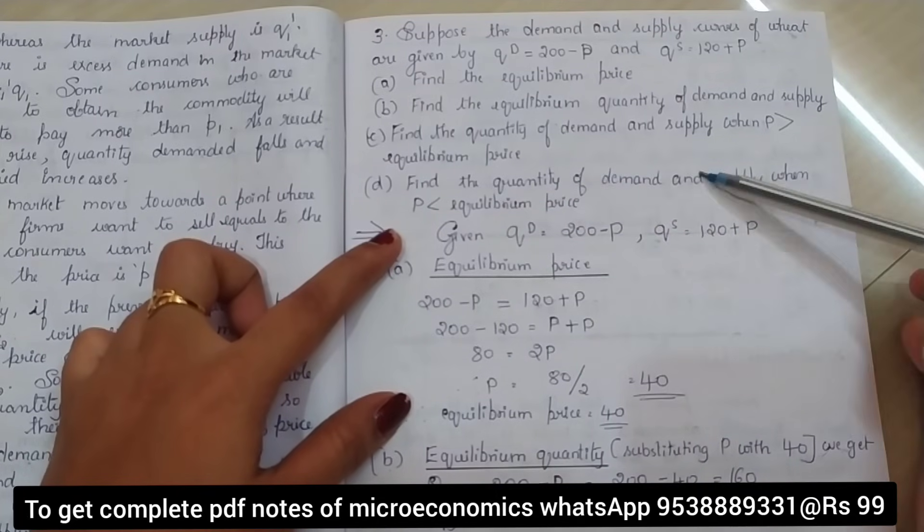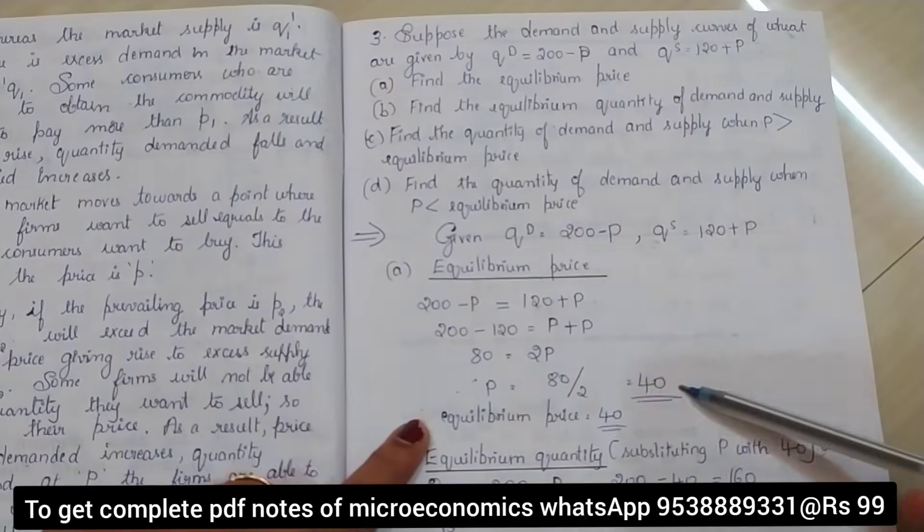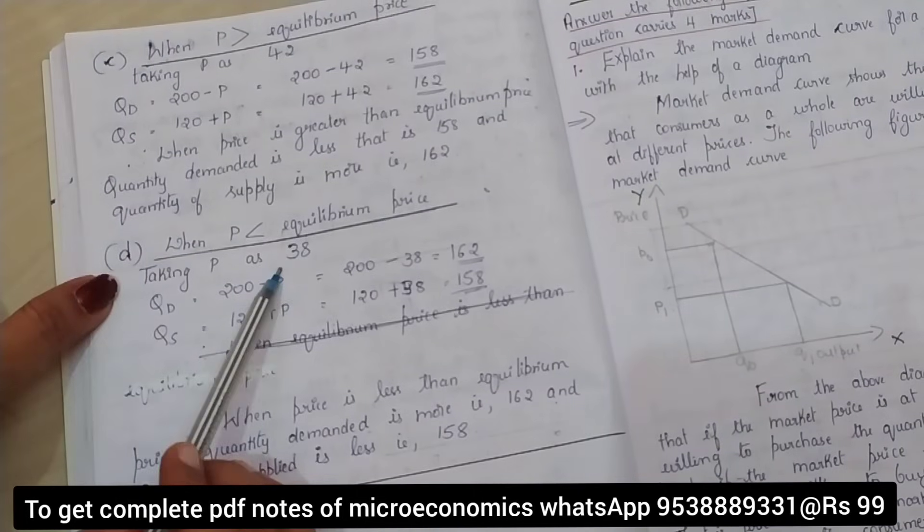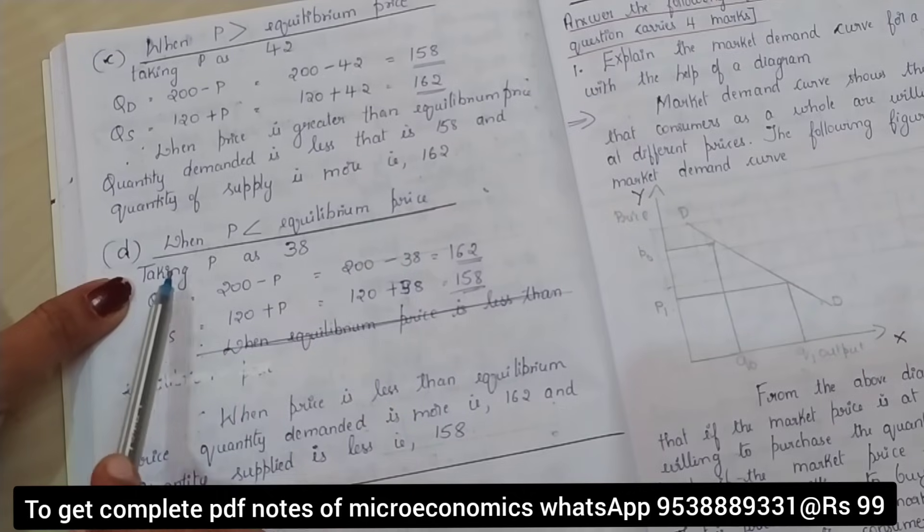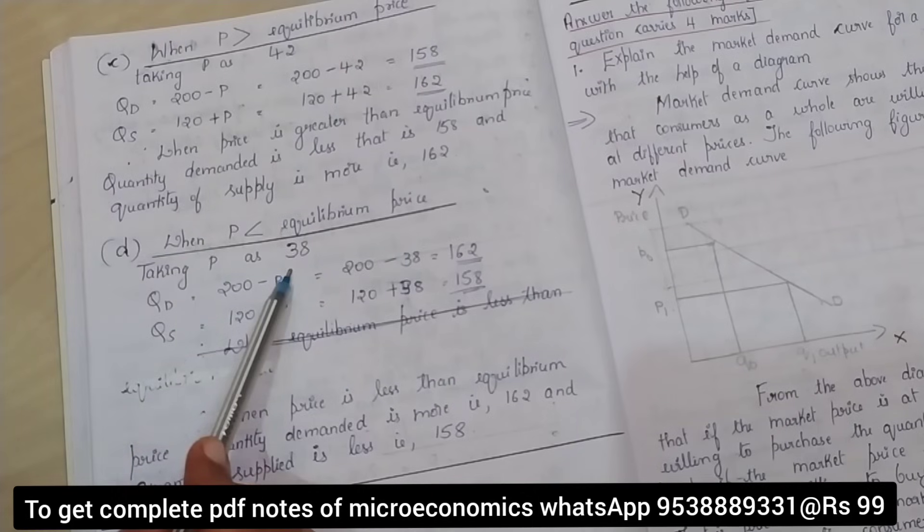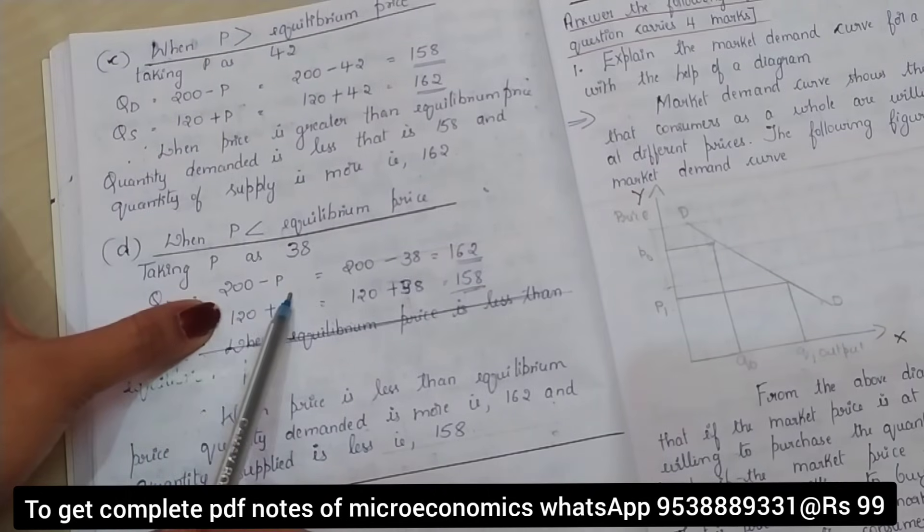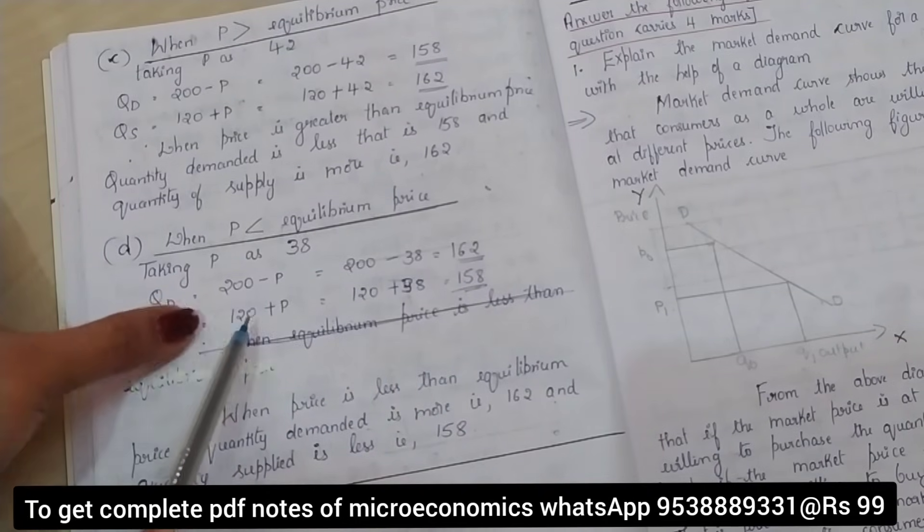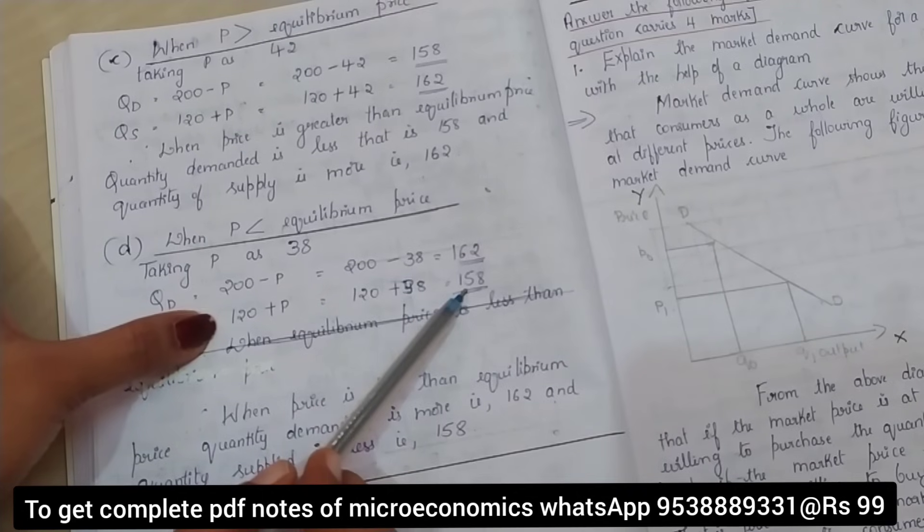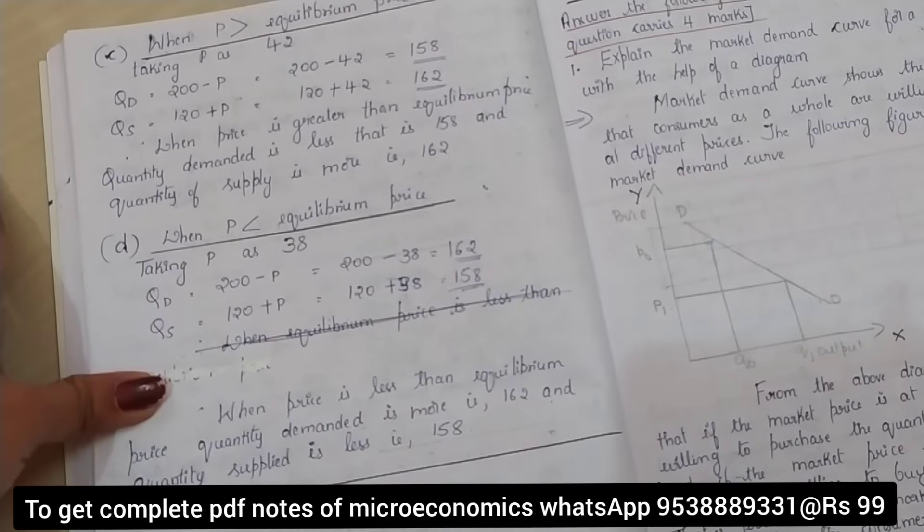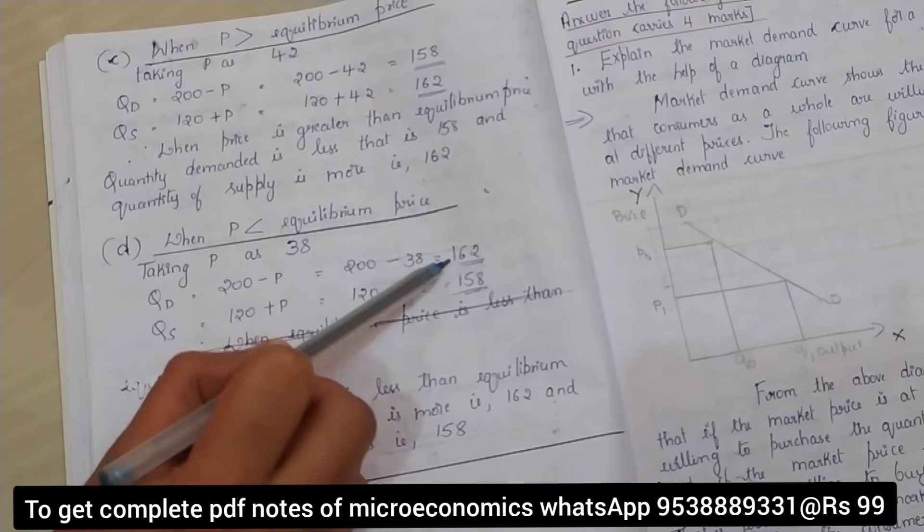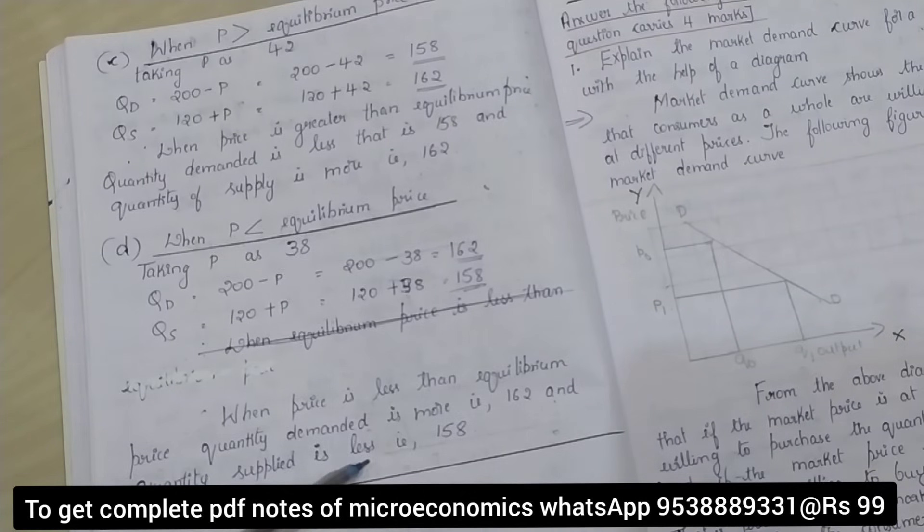Similarly, the next question: find the quantity of demand and supply when price is less than equilibrium price. Equilibrium price is 40, so we can take any value less than 40. I am taking 38. When price is less than equilibrium price, we are taking P as 38. Quantity demanded equation: 200 minus 38, answer is 162. Quantity supplied: 120 plus 38, answer is 158. Therefore, when the price is less than equilibrium price, quantity demanded is more, 162, and quantity supplied is less, 158.